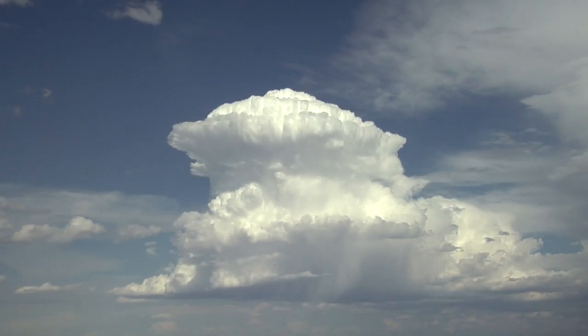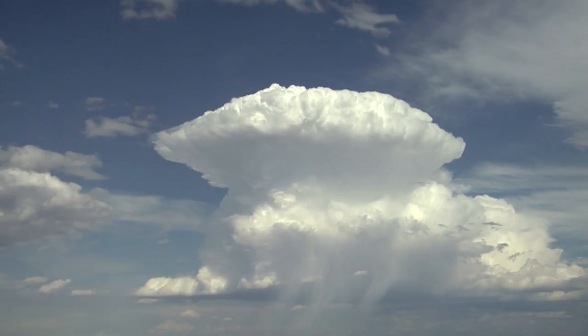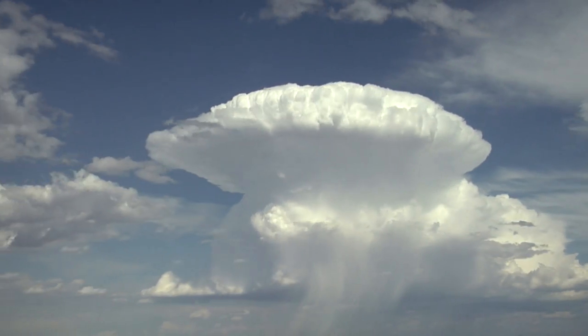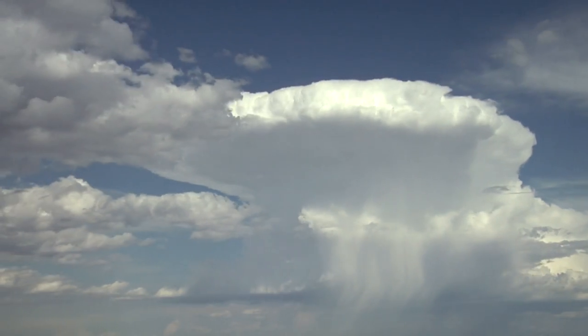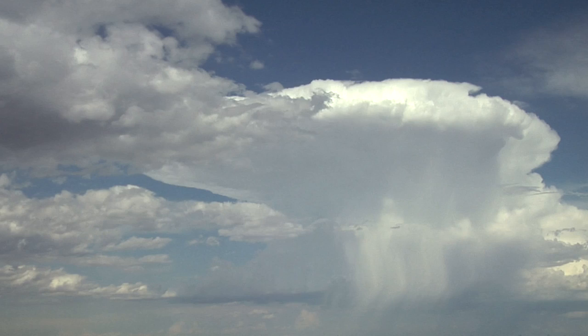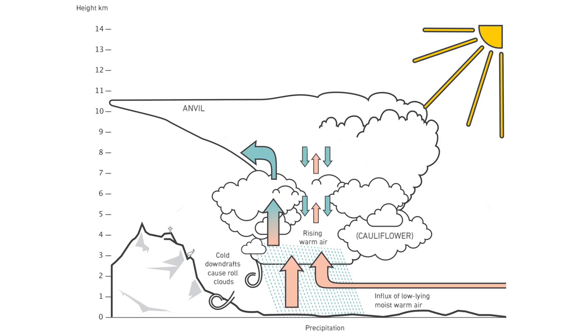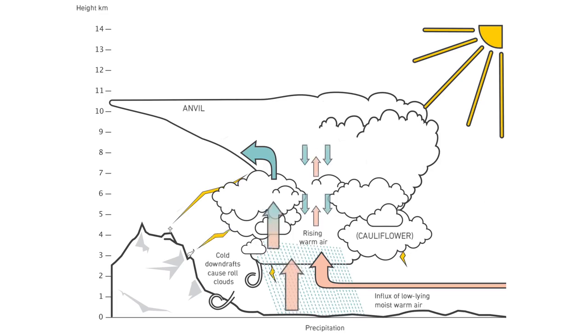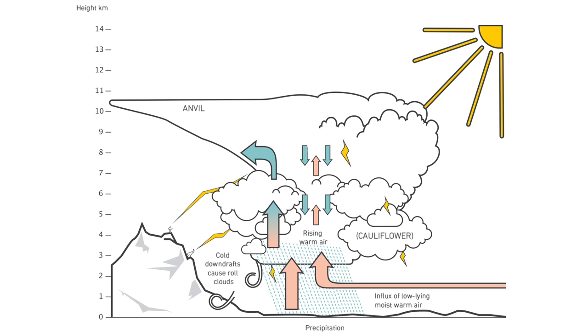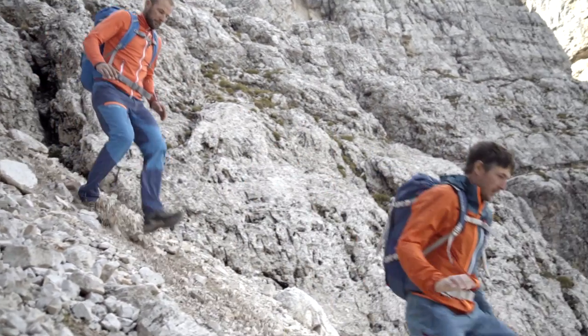A heat storm is a localized weather occurrence and can be recognized by the cumulus clouds that form and take on a tower shape. Heat storms normally occur from midday to the afternoon. They are localized and very threatening. When you recognize the initial signs, there is only one option: to execute an immediate retreat.